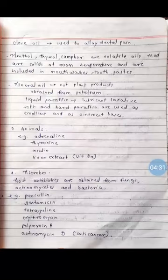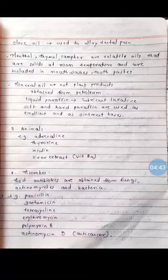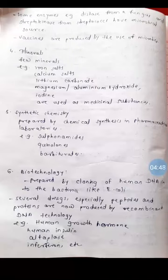The third source is microbial sources. Most antibiotics are obtained from fungi, actinomycetes, and bacteria. Examples include penicillin, gentamicin, tetracycline, erythromycin, and actinomycin D. Some enzymes are also obtained from microbes — for example, diastase from a fungus and streptokinase from streptococci. Vaccines are also produced using microbes.